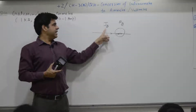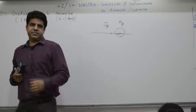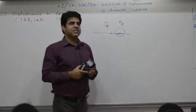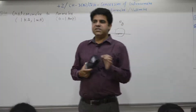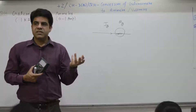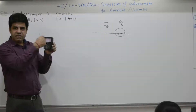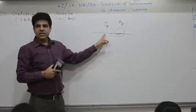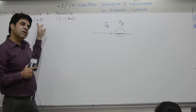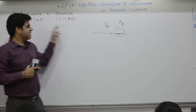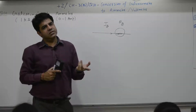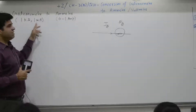Why can it measure only small current? It is a capacity of the wire. The winding wire is very thin — it can carry only 1 milli ampere current. If you flow 2 milli ampere current, the heat produced is more than its bearing capacity; it will burn and get damaged. So you can measure only 1 milli ampere.